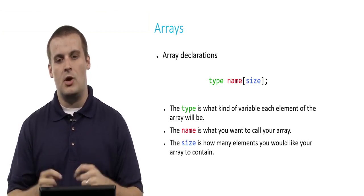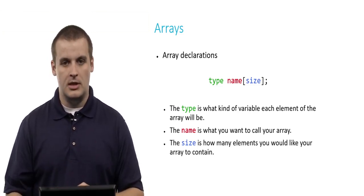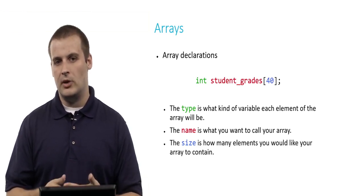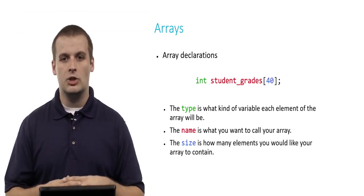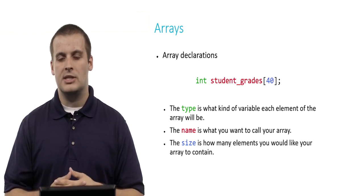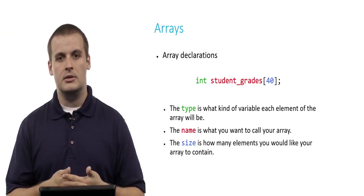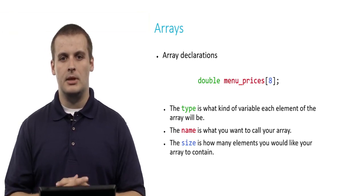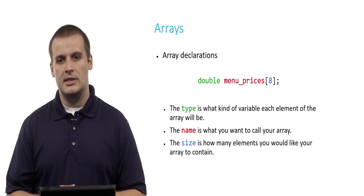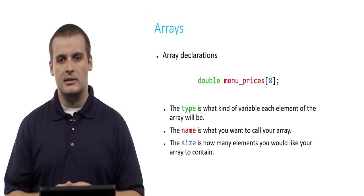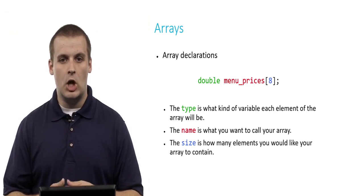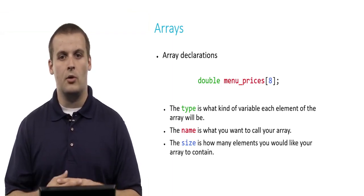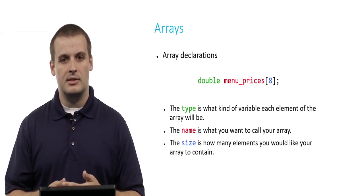How many integers do you want? How many floats do you want? For example, int student_grades[40] declares an array called student_grades which consists of 40 integers. Here's another example: double menu_prices[8] creates an array called menu_prices which consists of room in memory for 8 doubles.